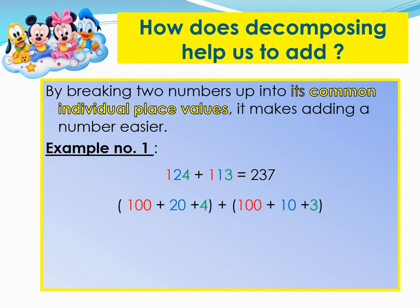First, we decompose the number, then we group the numbers together, and finally, we added the sums within the brackets to get three individual numbers, which were then added together to give you an answer to the addition sum, which was 237.